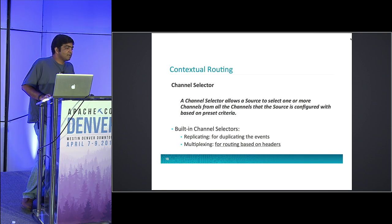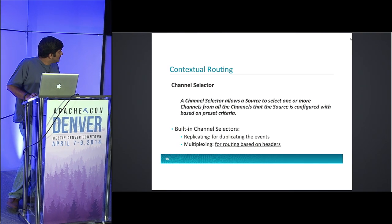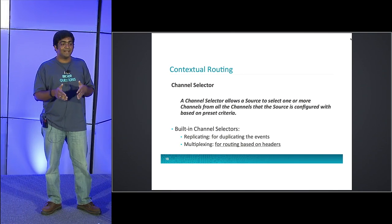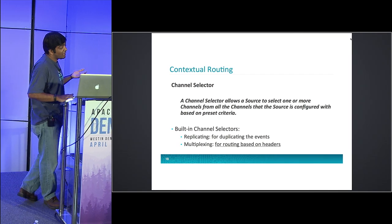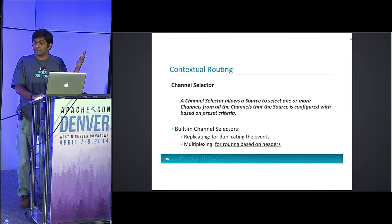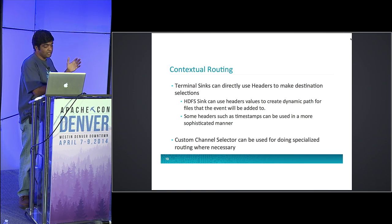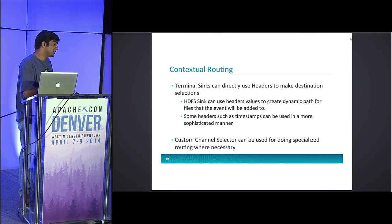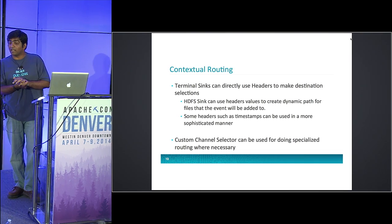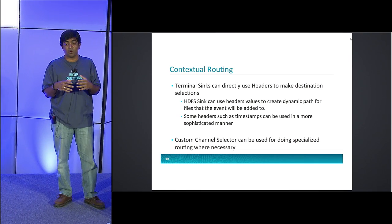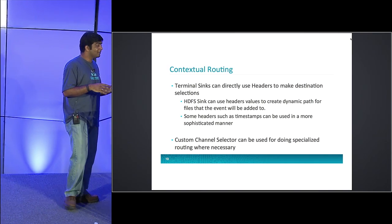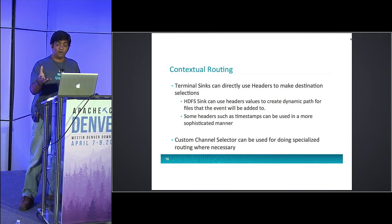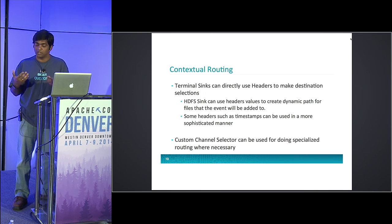Contextual routing is moving your data based on the content of your event. The multiplexing channel selector uses headers for this — you specify which header to use, look at the value of that header, and decide where the data goes. The multiplexing channel selector also has a default: if the value of the header doesn't match any configured values, it pushes data into a default channel. The terminal sinks can also use headers for dynamically deciding where data goes — for example, HDFS can look at your timestamp and push events into directories based on regular expressions. This allows you to bucket data into hour-based or hostname-based directories for easier loading into Hive.